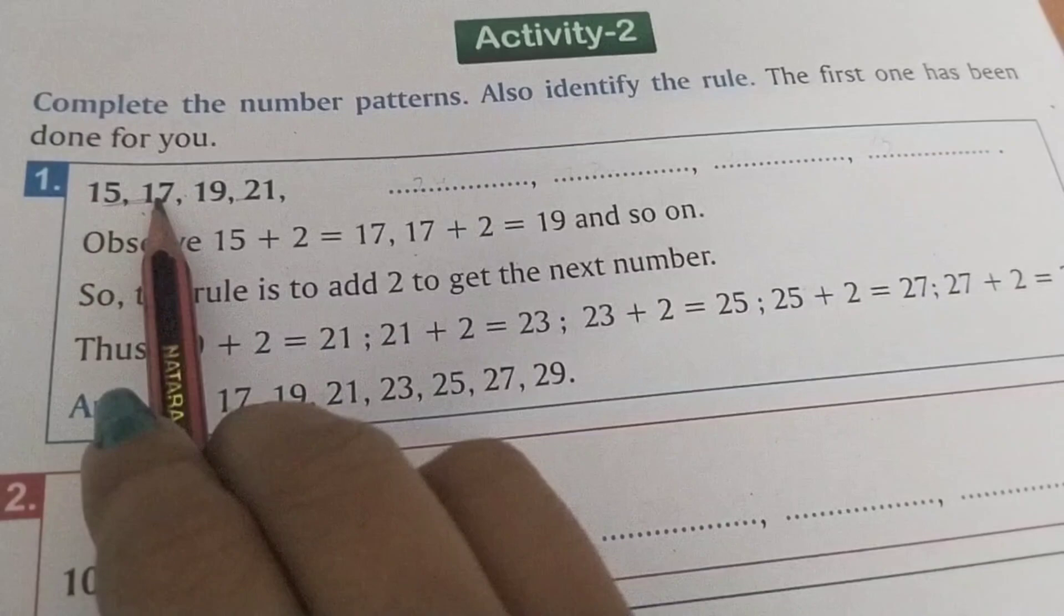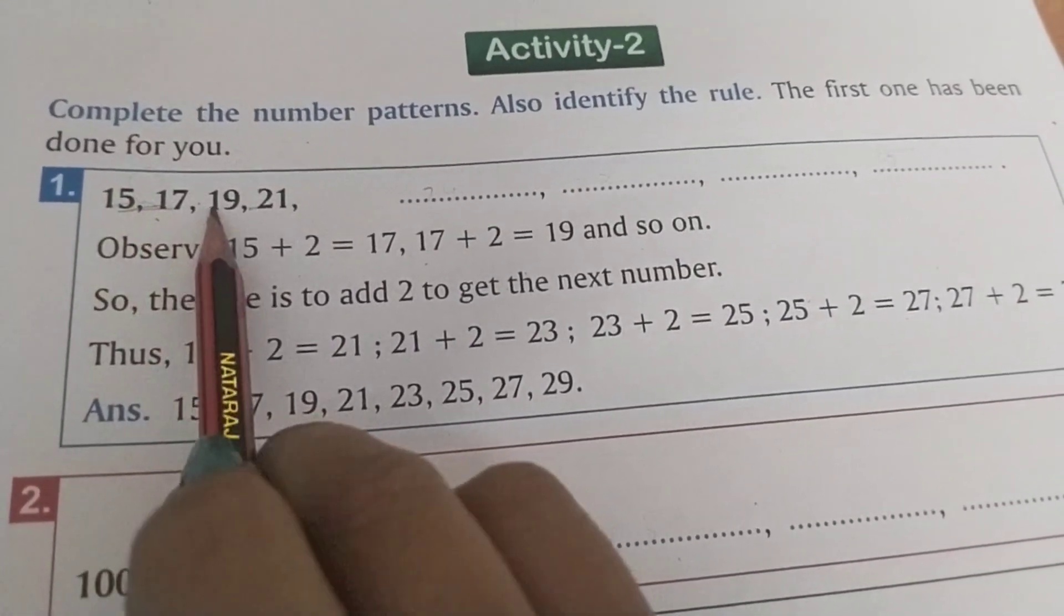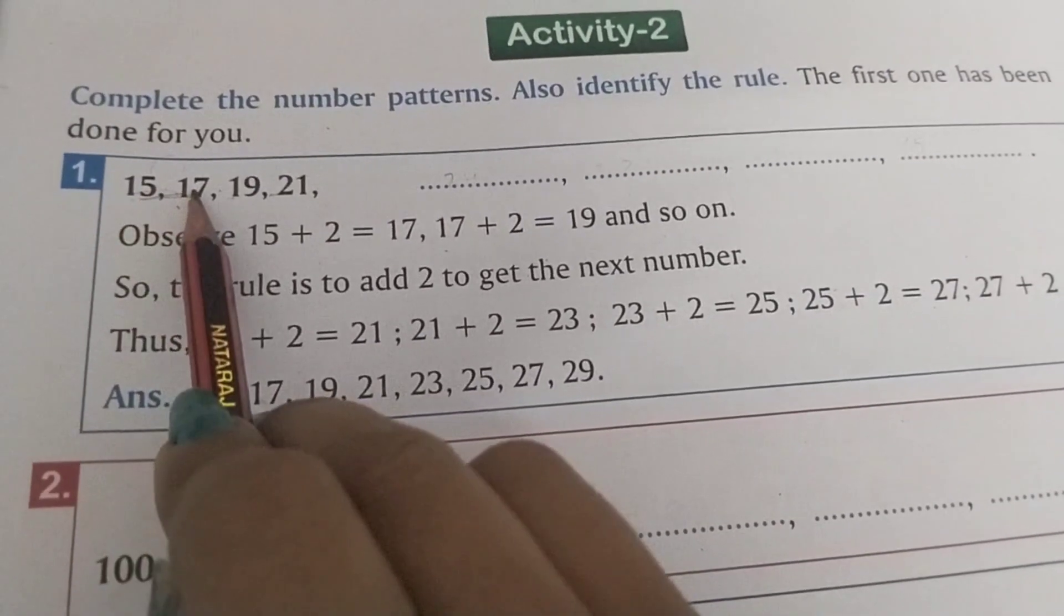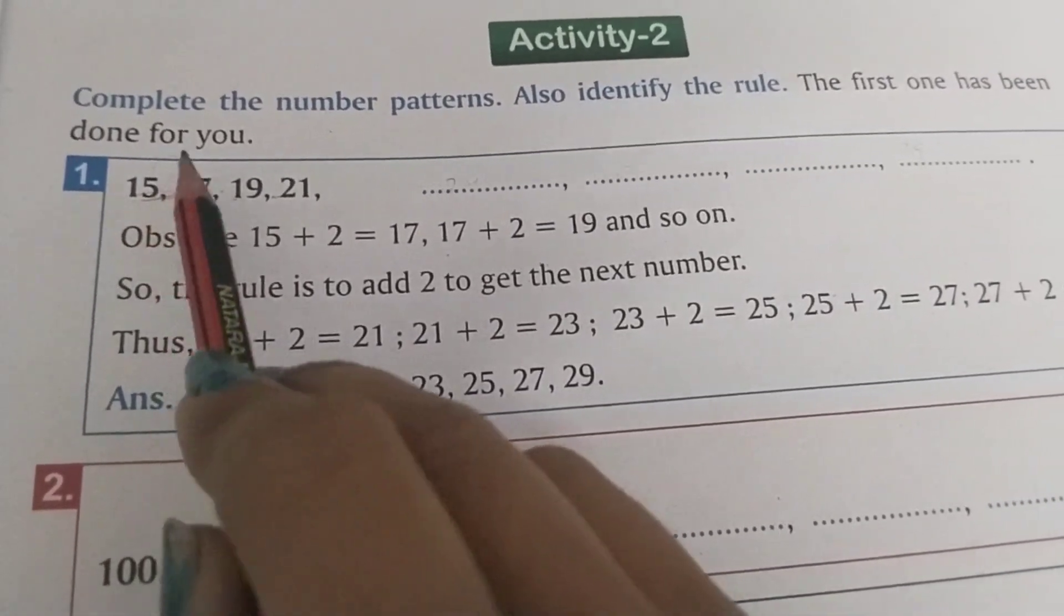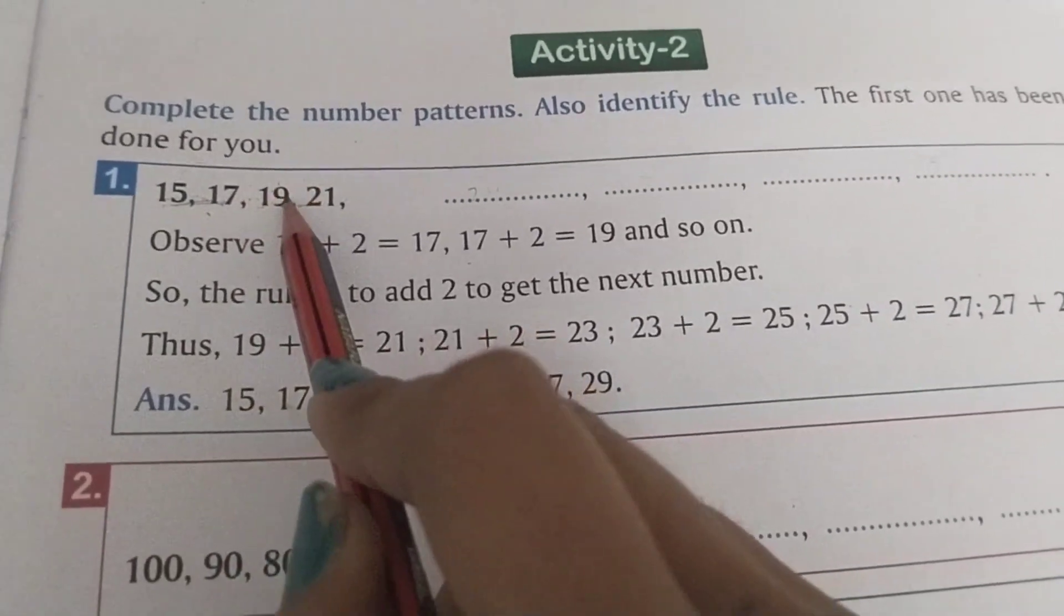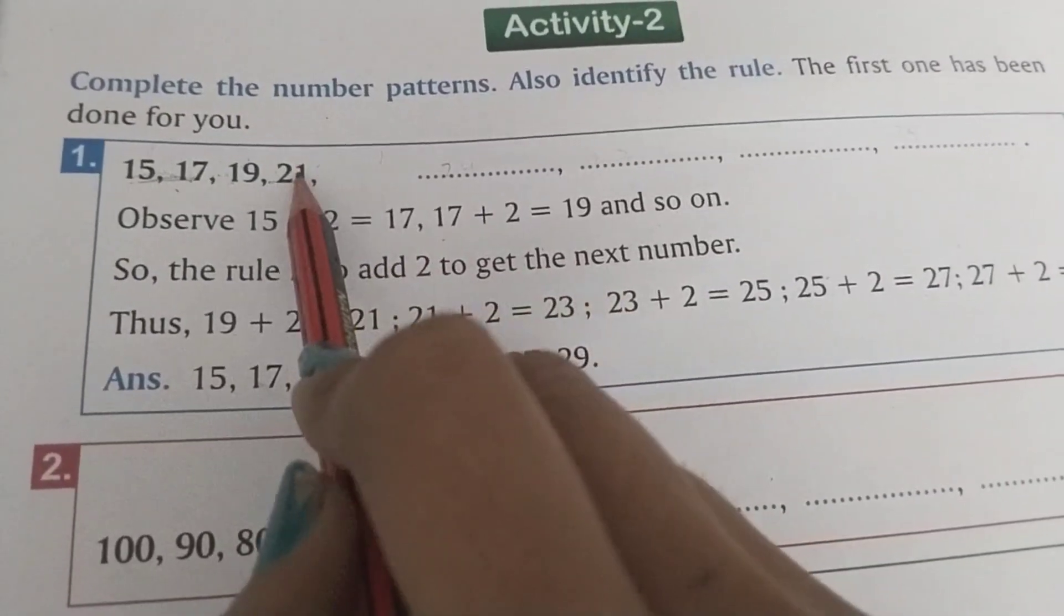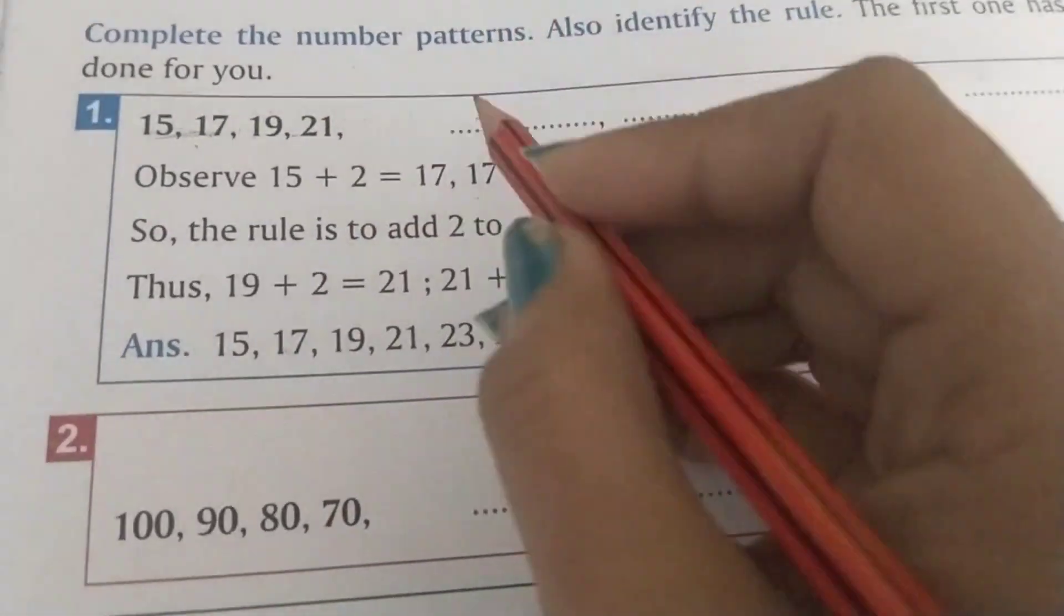First of all we are going to see how many numbers are left in these digits. 15, after 2, 17 comes. 15, 16, 17. Then after 2, 19 comes. 18, 19. And after 2, 21, 22, 23 will come.